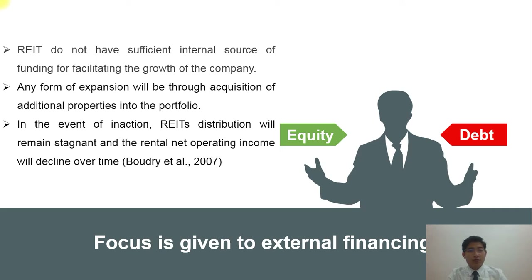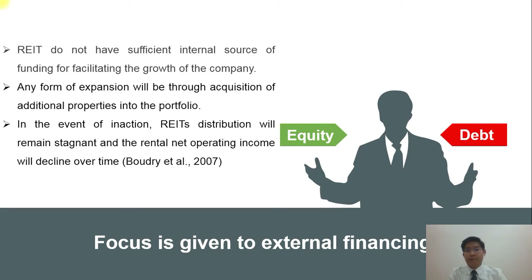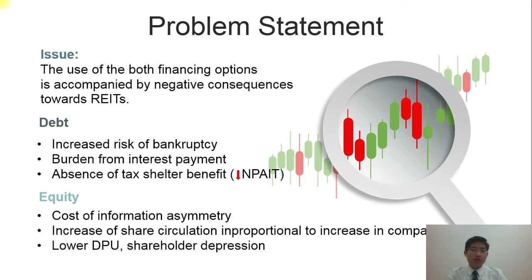REITs do not have sufficient internal sources because 90% is distributed and there is very limited retained earnings. A form of expansion would be acquisition of additional properties into the portfolio. If this doesn't happen, the REIT's distribution will remain stagnant and rental net operating income will decline over time. Since the focus is on external financing, there are two options: debt or equity. Debt always incurs risk of bankruptcy, especially as interest rates increase.